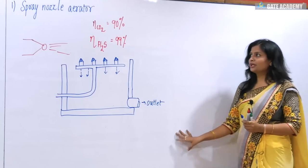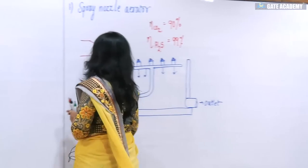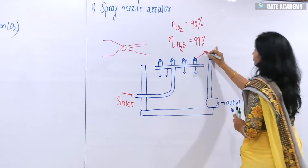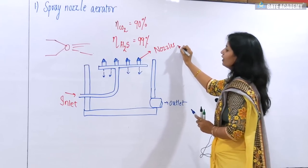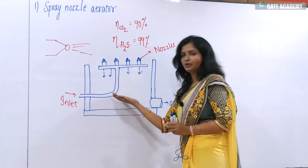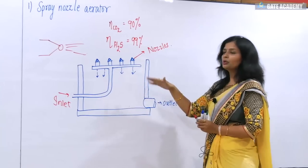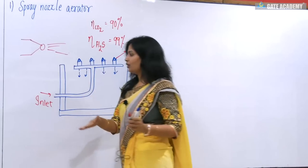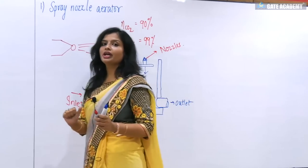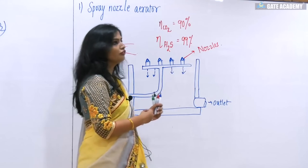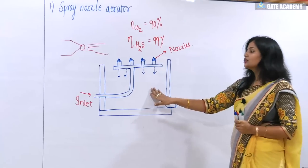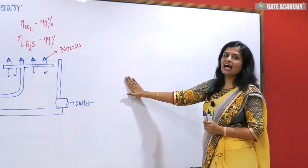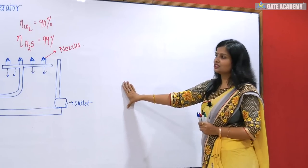I have drawn a diagram of the spray nozzle for you to understand. This is the inlet part of the water, and these are the nozzles provided. The water enters, comes in contact with oxygen through the nozzles, and then goes out through the outlet pipe. For water to be supplied at a height, you need mechanically supplied energy — motors. So this is a costly process, and although the efficiency is good, we do not use it.